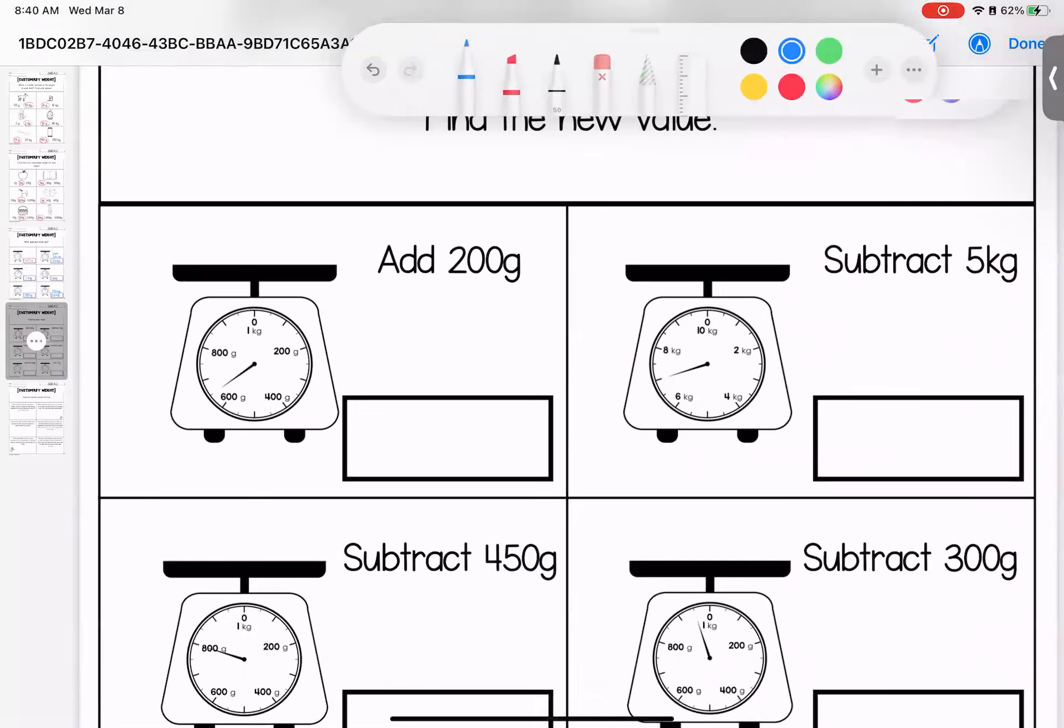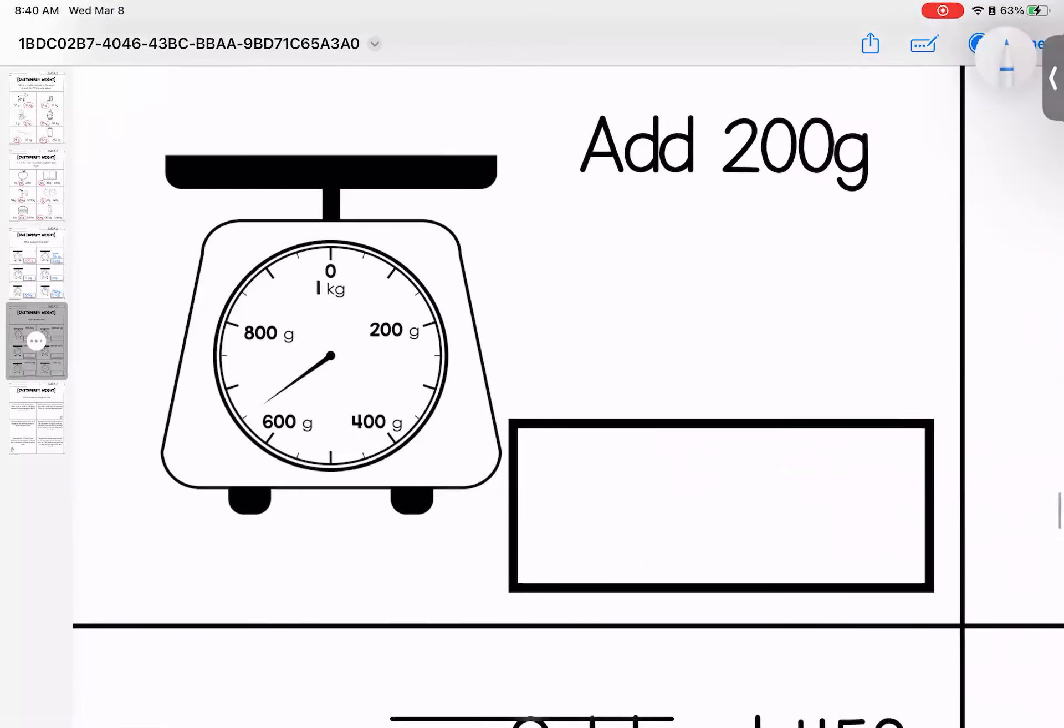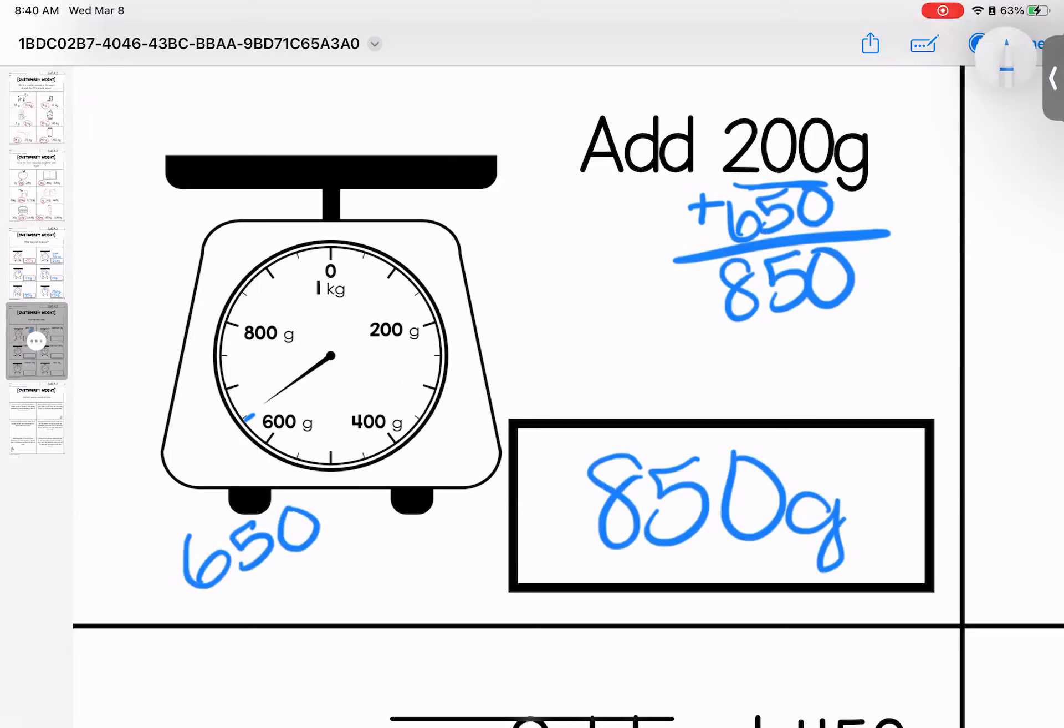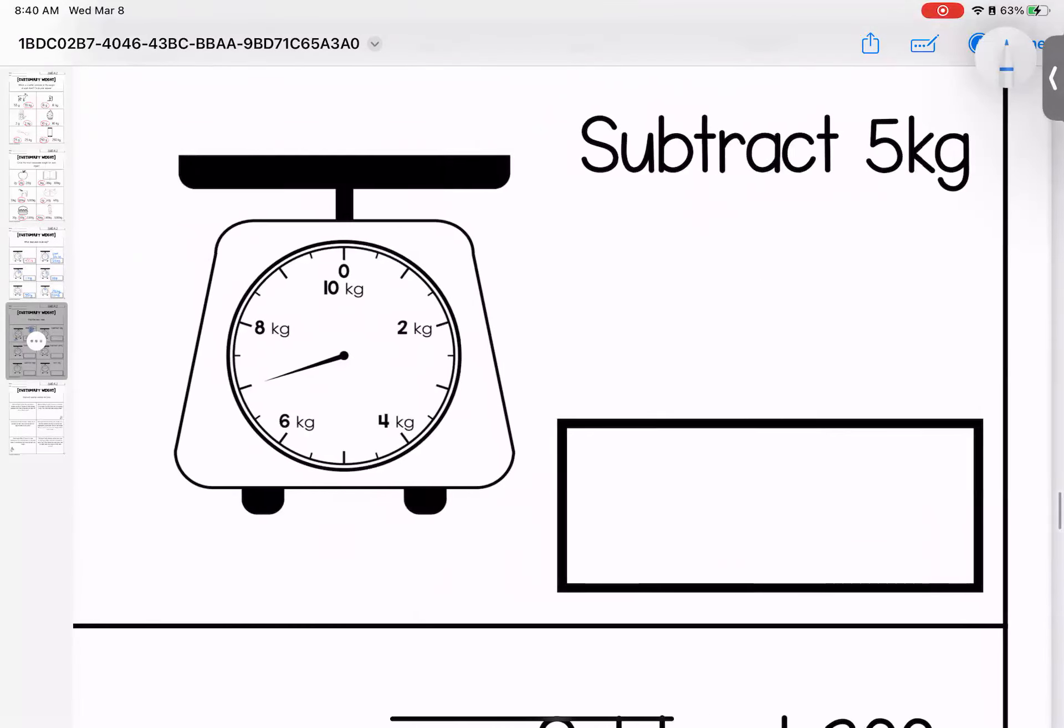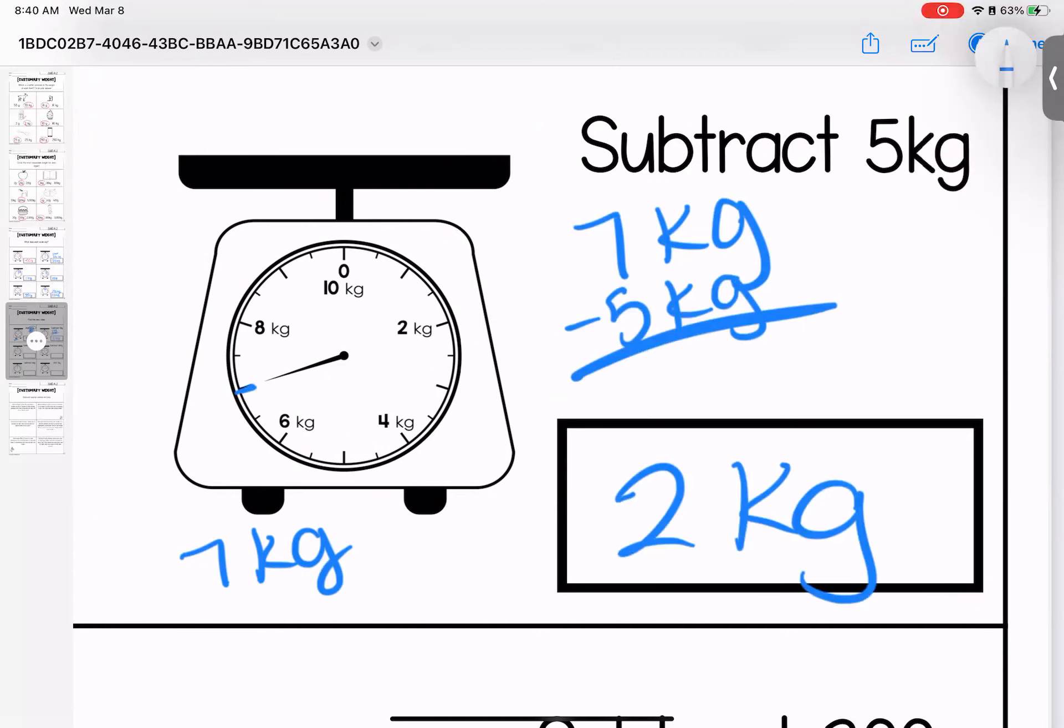All right, nuggets. We love to build on our skills. So here, we are not only reading, but we're also adding to it, similar to something we did last week. So I'd like you to add 200 to what we have here. I have 600. Half past is 650. When I add them together, I have 850 grams. So my scale has 650. I add the 200. Over here, I'm at 7 kilograms. I want to subtract 5 kilograms. I'm left with 2 kilograms.